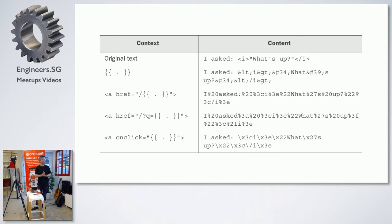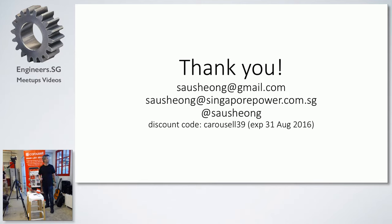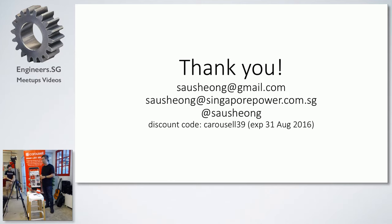That's a whirlwind introduction to Go programming for developing web applications. As promised, here's the discount code — it expires on the 31st of August, so any time from now until then. The publisher gave 39% off, especially for this event. There are also two physical books for the lucky draw and two free ebook codes — I'll get your names and email addresses and send those to you.